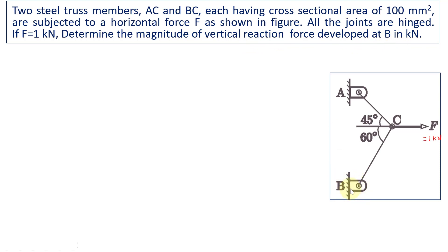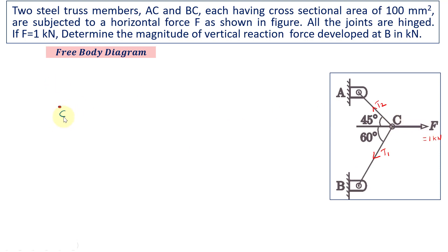B is a pin joint member. Before calculating the reaction force at joint B, we must know the force acting along truss member BC. To determine the tension along BC, we are going to draw the free body diagram of the given configuration. We will draw the free body diagram for point C, considered as a particle acted upon by three forces.